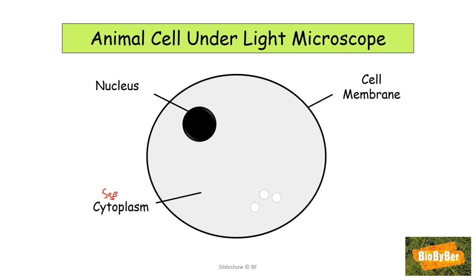The watery jelly is the cytoplasm — note the 'cyte' sound in cytoplasm. The cytoplasm is the site of chemical reactions. Lastly, an animal cell will have small vacuoles, though these are often not labelled in science books. These vacuoles can store sap, sugars, and salts.